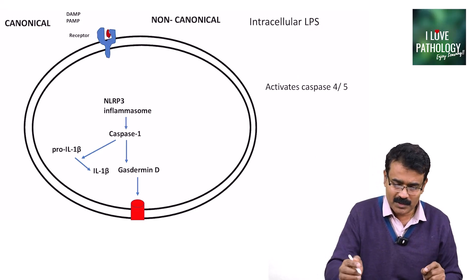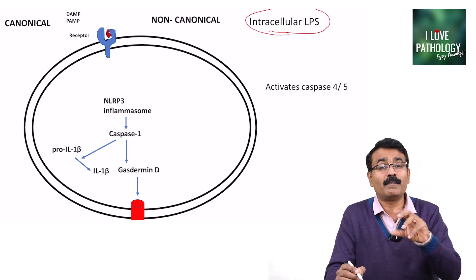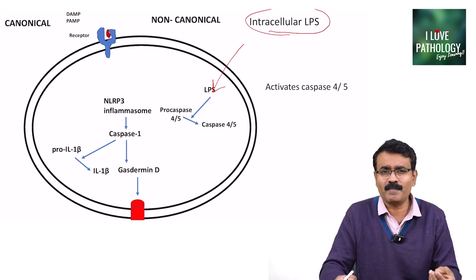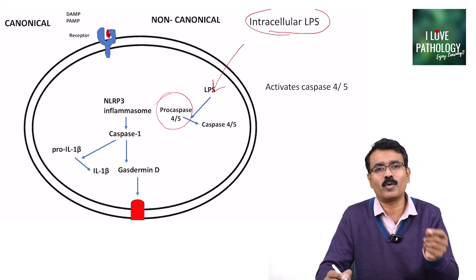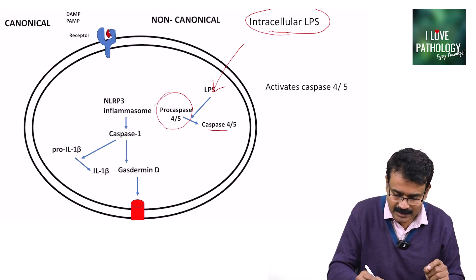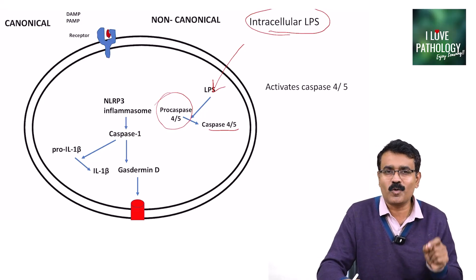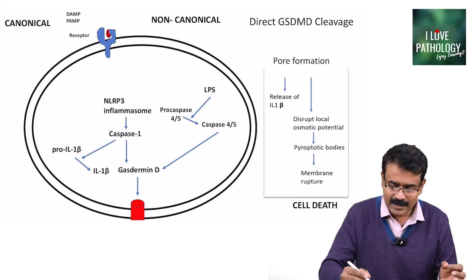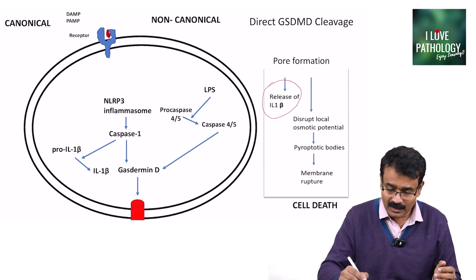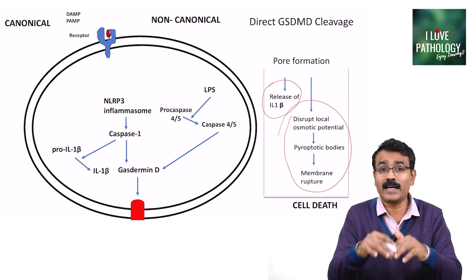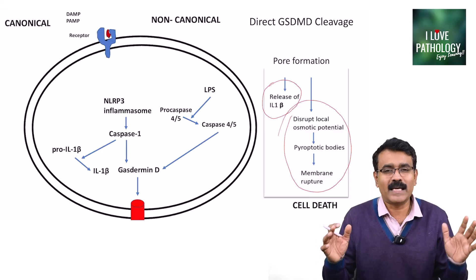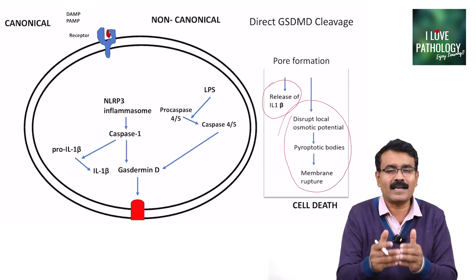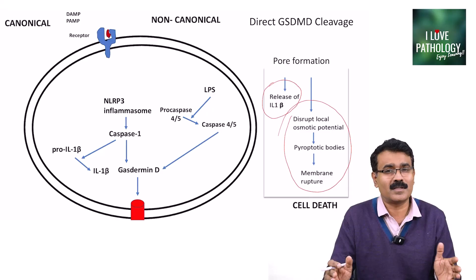Moving on to the non-canonical pathway of pyroptosis: intracellular lipopolysaccharide from bacteria, once inside the cytoplasm, activates pro-caspase-4 or pro-caspase-5 into active caspase-4 and caspase-5. These activated caspases further cleave gasdermin D, resulting in pore formation. The pores either release interleukin-1-beta outside or cause pyroptotic bodies, membrane blebs, and finally membrane rupture leading to cell death.